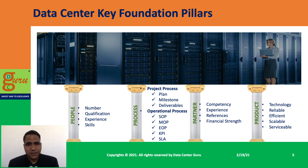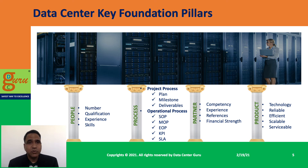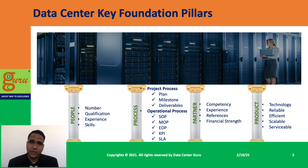The third pillar is partner. This is another critical element for any program or project. When selecting a partner, it is very important to check that they have competent resources for the job, experience doing such work — not doing it for the first time at your expense — a reference of successful projects and programs in the past, which drastically increases your probability of success, and the financial strength to support the project.